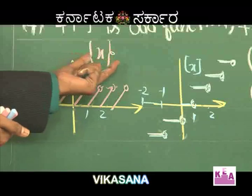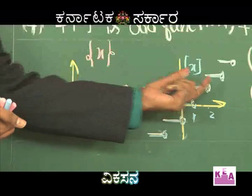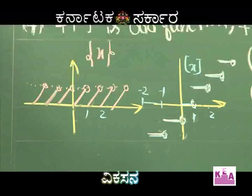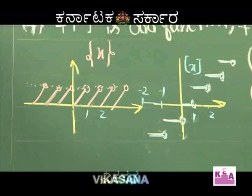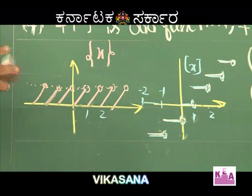Importantly, f plus g — that is, fractional part of x plus integral part of x — equals x, and x is always an odd (linear) function. With this knowledge, let us analyze the given options.